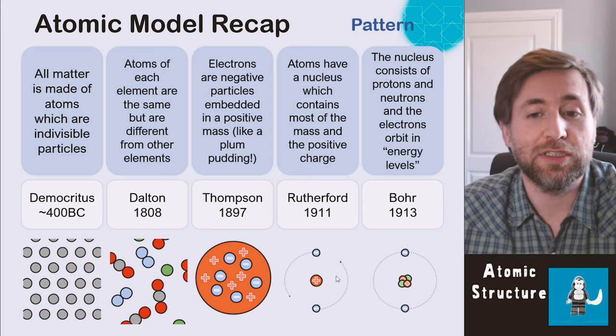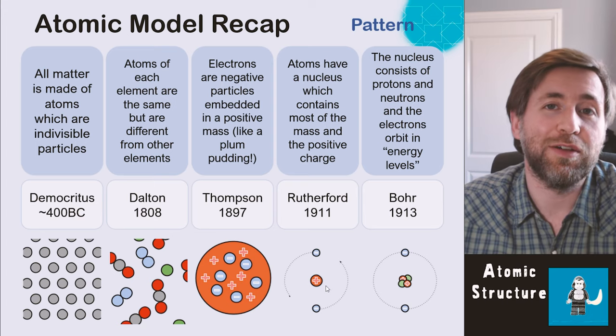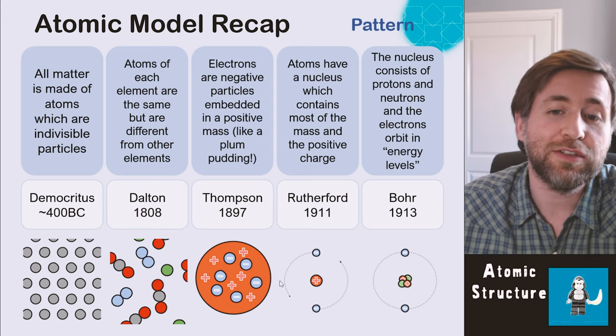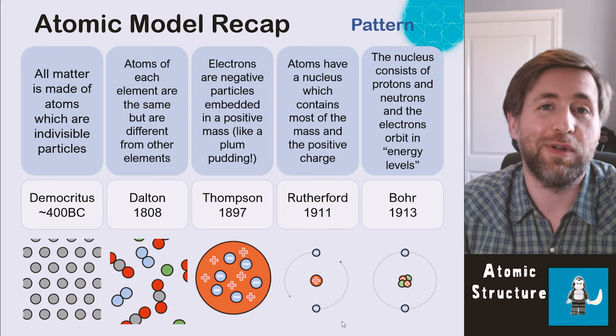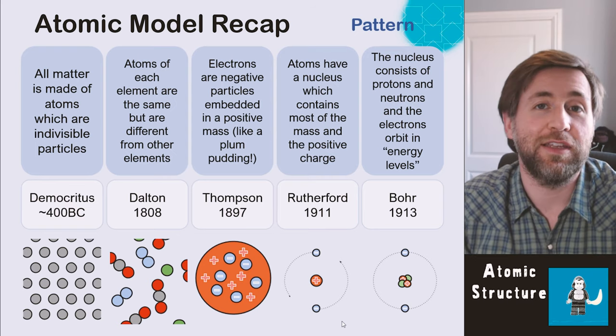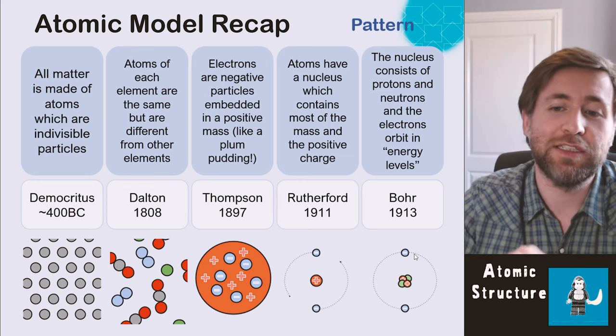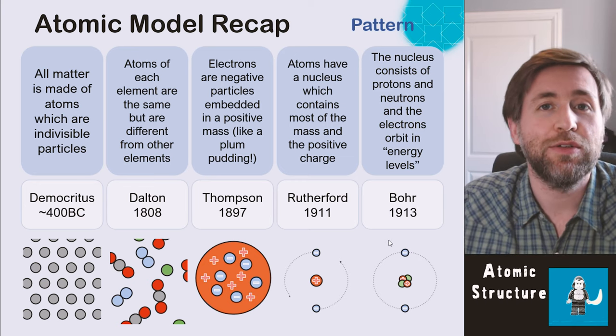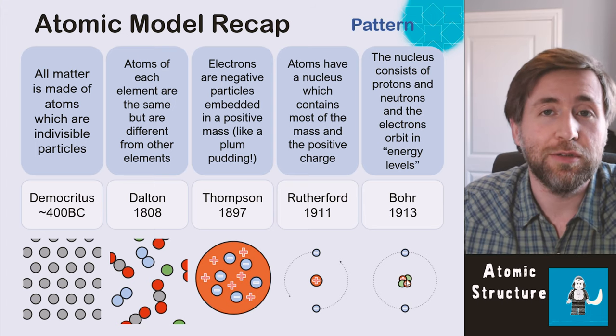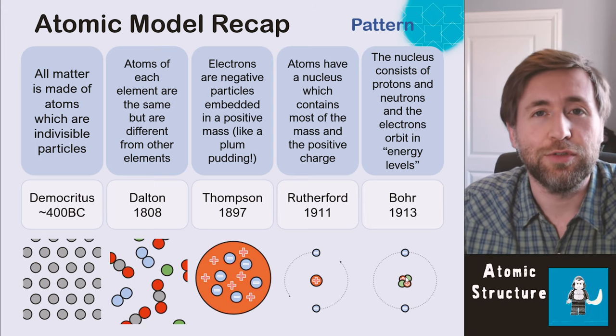Rutherford's experiment discovered the nucleus. And he said that there was a dense positive nucleus and that the electrons must somewhere be orbiting around it. He didn't have an idea that the electrons had some energy and some energy that would keep them in those energy levels. And he didn't have the idea, which is included in the Bohr model, that there are two particles within the nucleus, the protons and the neutrons.